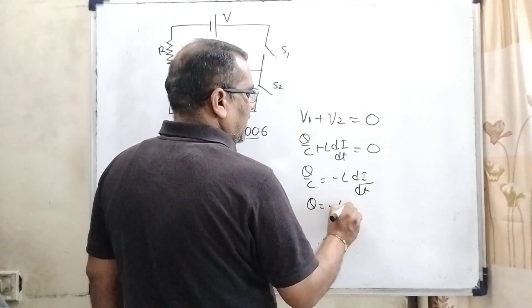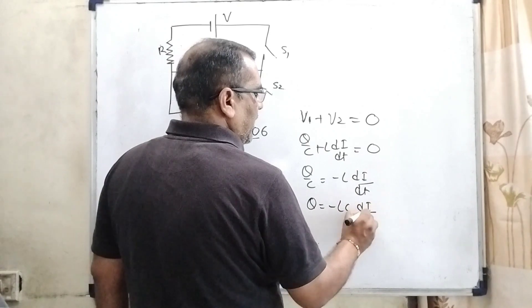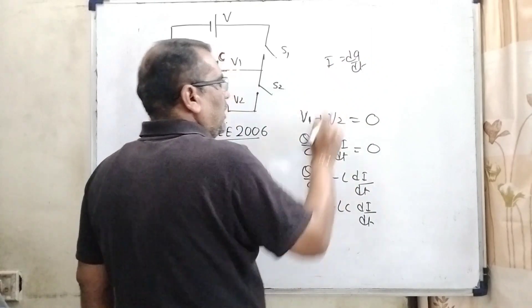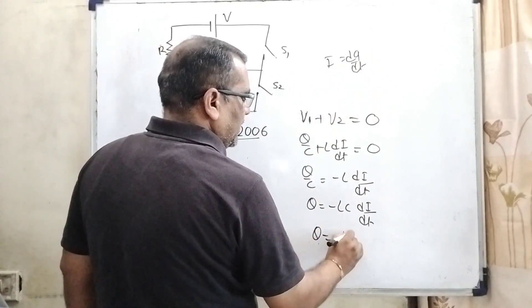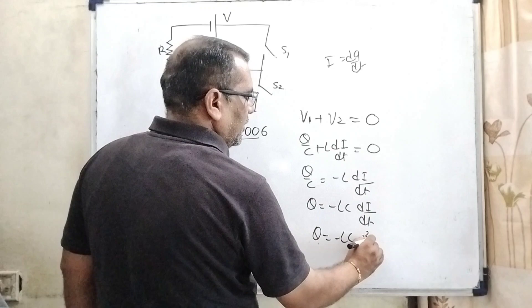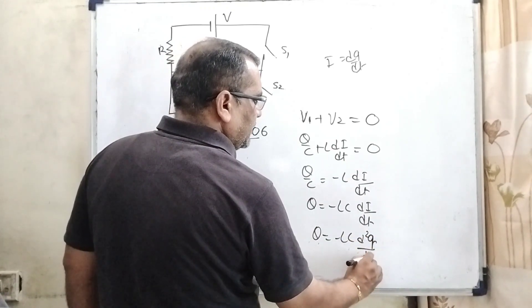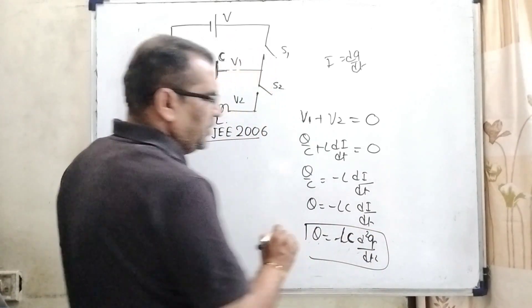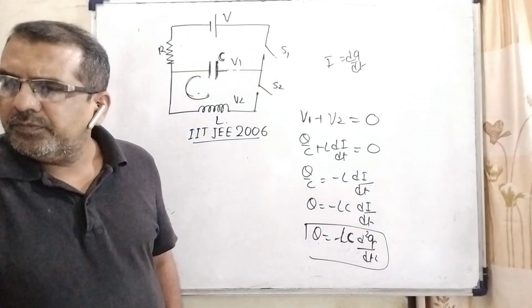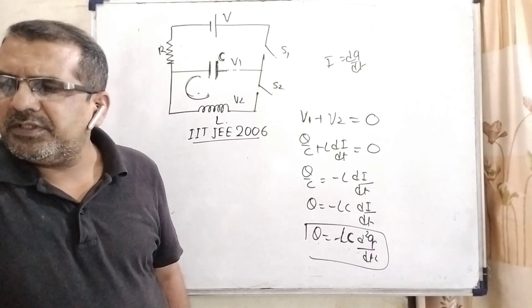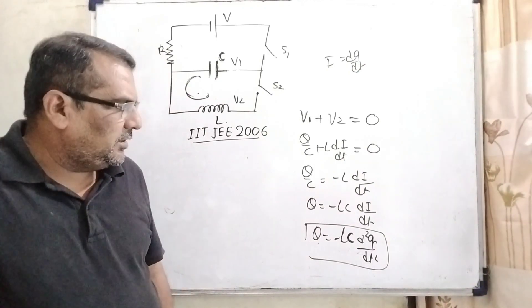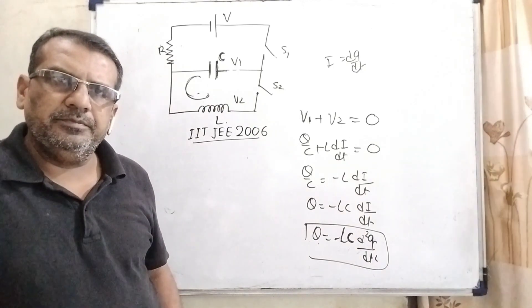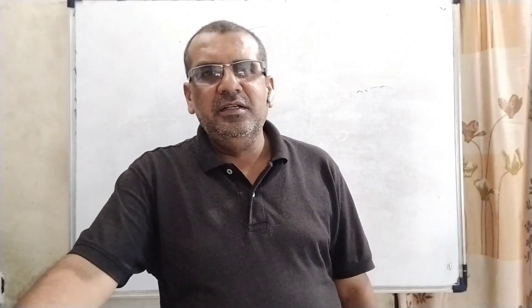Then q by C, transposing this term, now becomes minus L di by dt. Q equal to minus LC di by dt, and as we know that i equal to dq by dt, now substitute this value, then we get minus LC d square q upon dt square. So here let us see which option is matching. Here option C, the charge on the capacitor is q equal to minus LC d square q by dt square. I hope you understood this question.